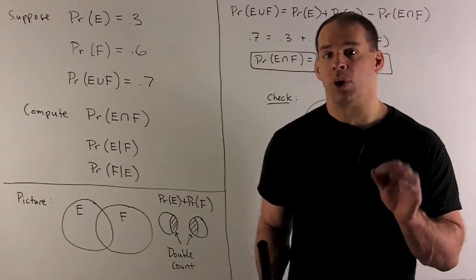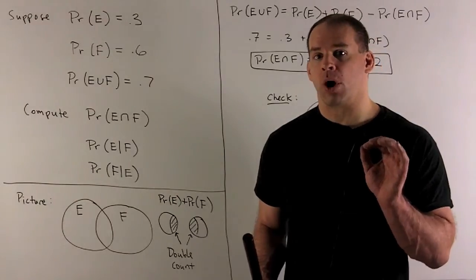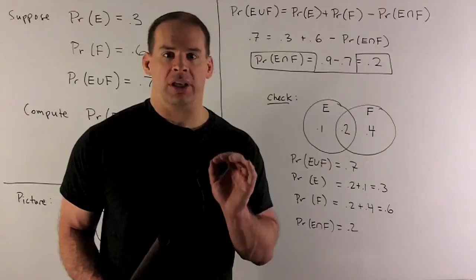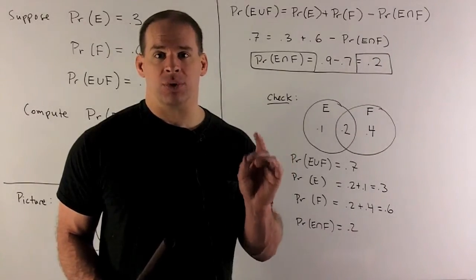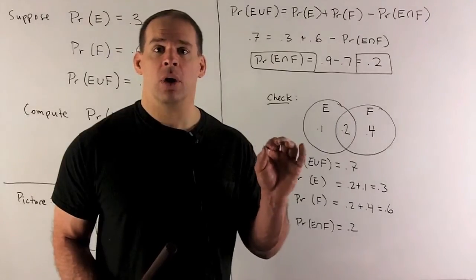So in the union, we only want the intersection to appear once. So for our union formula, what do we do? We're going to take probability of E union F, it's going to be equal to the probability of E plus the probability of F, and we take off one intersection.